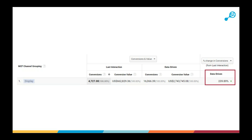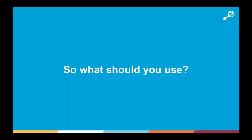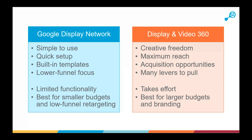So what should you use — GDN or DV360? Google Ads has GDN with affinity and in-market targeting and can do a very good job. The GDN is a straightforward platform intended for anyone to turn up and just use: setup is very quick, built-in responsive ad templates are very simple — just give them an image, text, and a logo and it manages everything else. Being built into Google Ads, it has that PPC lower-funnel, click-focused approach where the algorithm trends toward immediate engagement.